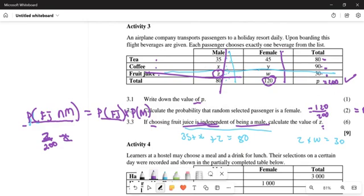How many fruit juices do we have? We have 30. It's going to be 30 over 200 multiplied by the total number of males. That's 80 over 200. You get Z = Z over 200 multiplied by 30 over 200 multiplied by 80 over 200.